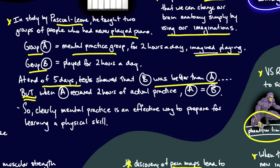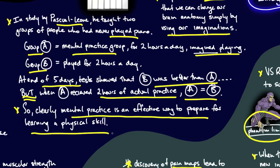But, and it's a big but, when group A received just two hours of actual practice, group A came up to the same level of skill as group B. So clearly, mental practice is an effective way to prepare for a physical skill.